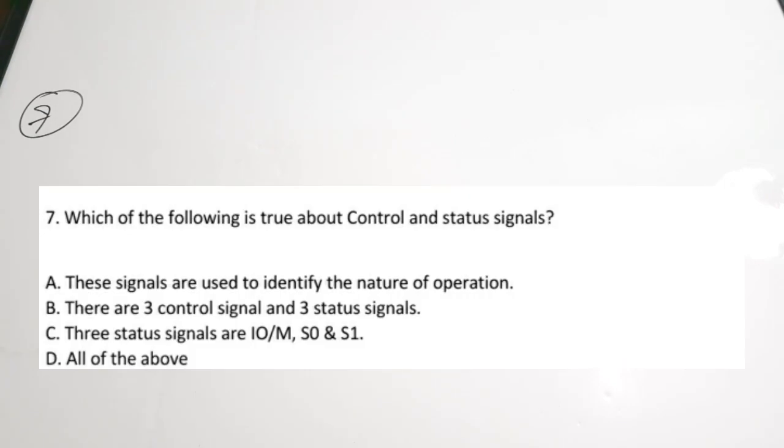The seventh question: which of the following is true about control and status signals? Option A — these signals are used to identify the nature of operation — refers to status signals. Option B mentions three control and three status signals. Option C states three status signals are IO/M bar, S0, and S1. Option D is 'all of the above.' Since all options relate to control and status signals, the correct answer is option D.